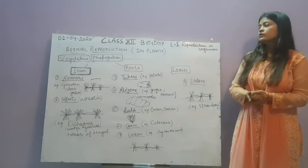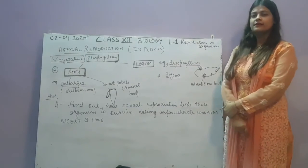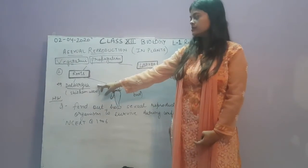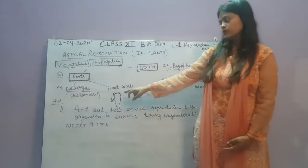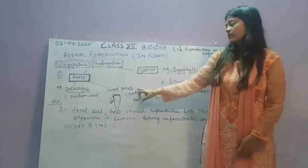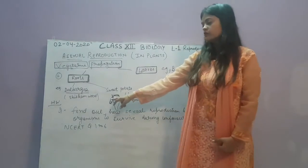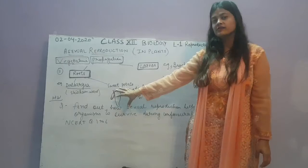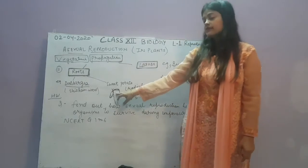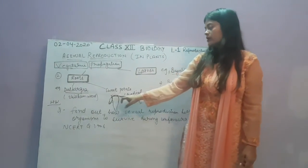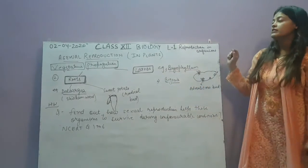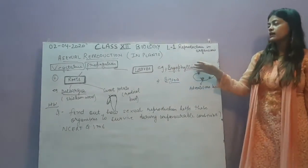Now we will discuss vegetative propagation through roots. There are only two examples: Dalbergia, also called shisham wood, and sweet potato. Both show vegetative propagation through roots. In sweet potato, a radical bud grows from the modified root structure, and through this radical bud a new plant is grown.